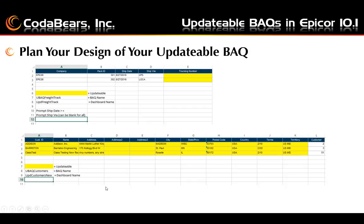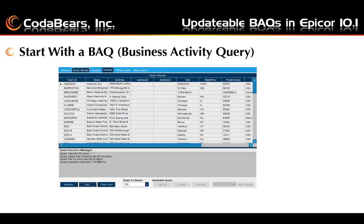We start with a BAQ — a business activity query. You should begin by designing a normal BAQ with the fields, layouts, sorts, parameters, criteria, etc. that you need for your BAQ to return the results that include the fields you want to see and the fields you want to update. Here we are including the required fields for a new customer, required by Epicor and/or required by our company. You analyze and test this query just as you would any other query and save your changes once you are happy. Your BAQ may also include additional calculations.